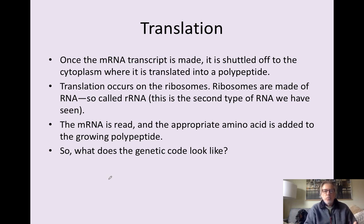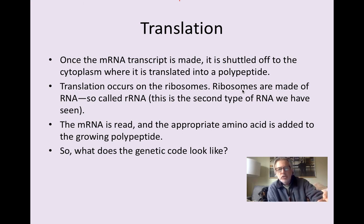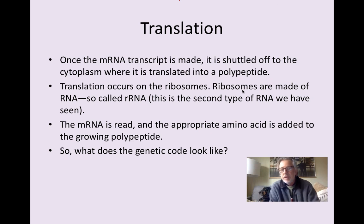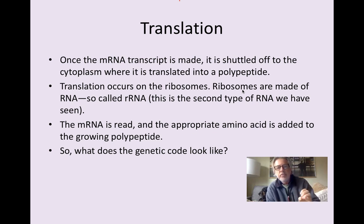The next question we have is, what does the genetic code look like? That is a question we will answer in the next video. So, I hope what you understand now is what the process of transcription is, what the process of translation is, how these two processes occur in both prokaryotic and eukaryotic cells. Remember that in eukaryotic cells, the original mRNA transcript that is made must be edited before it is exported from the nucleus. And you should understand transcription takes place via an enzyme called RNA polymerase, which makes a complementary copy in RNA of a gene.